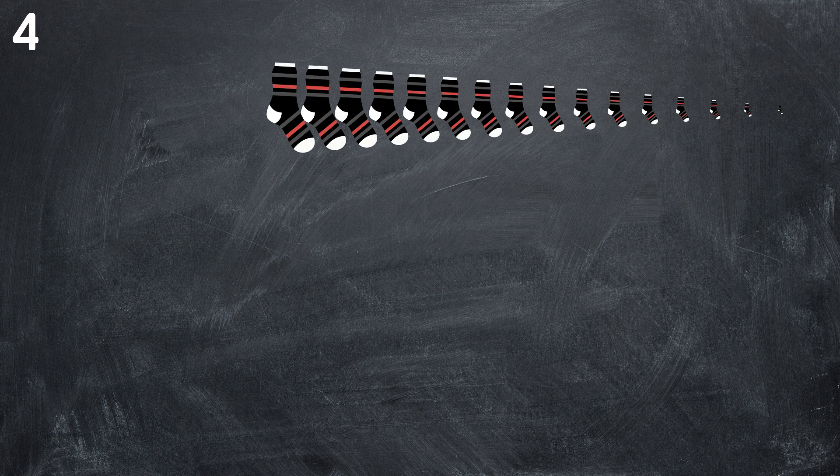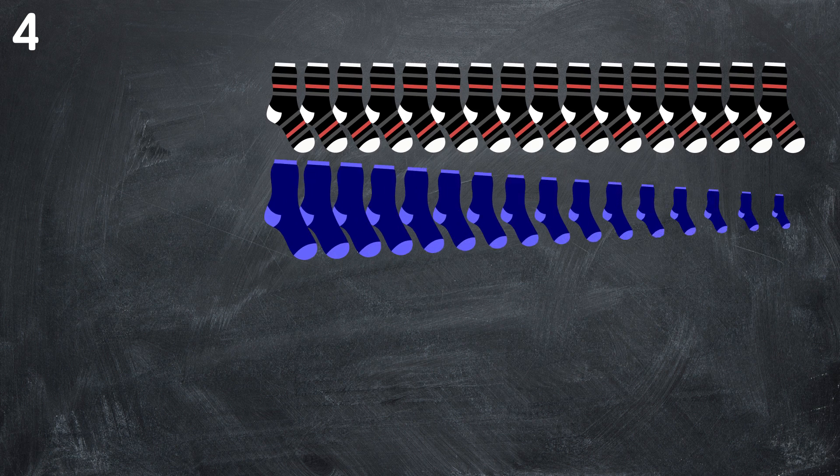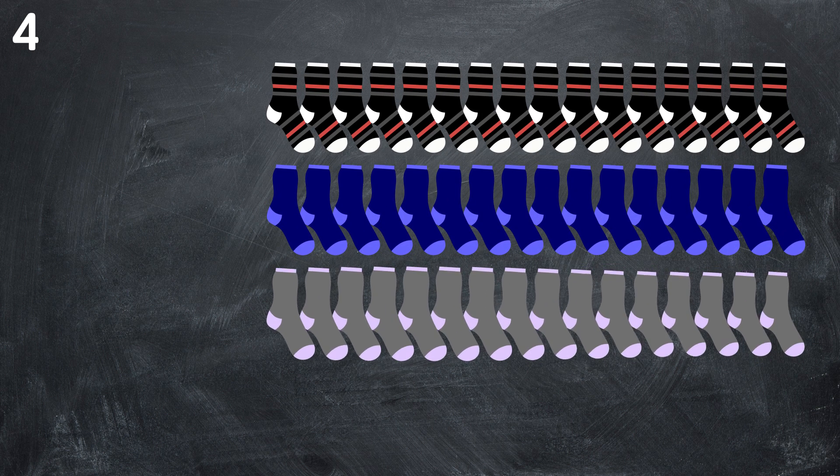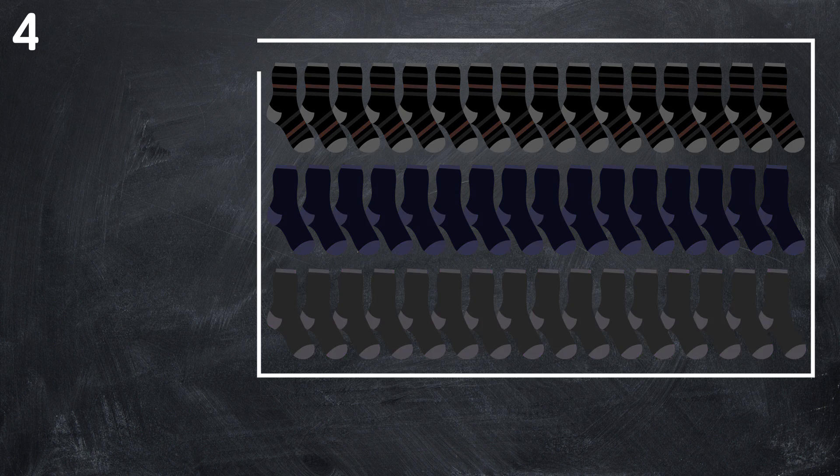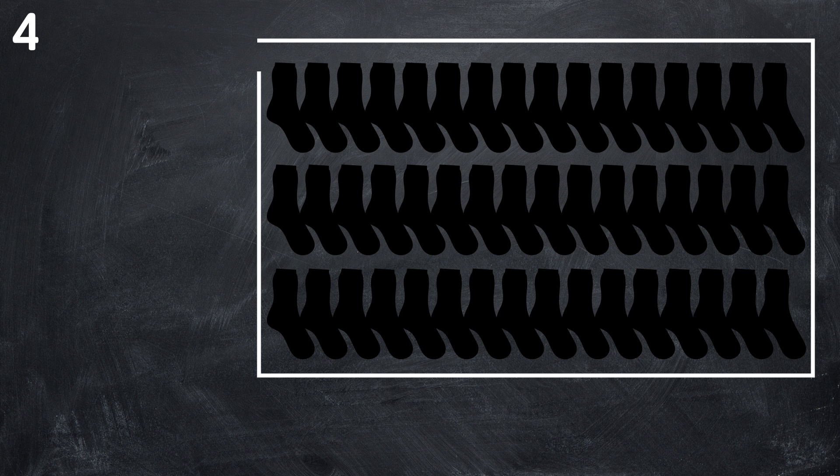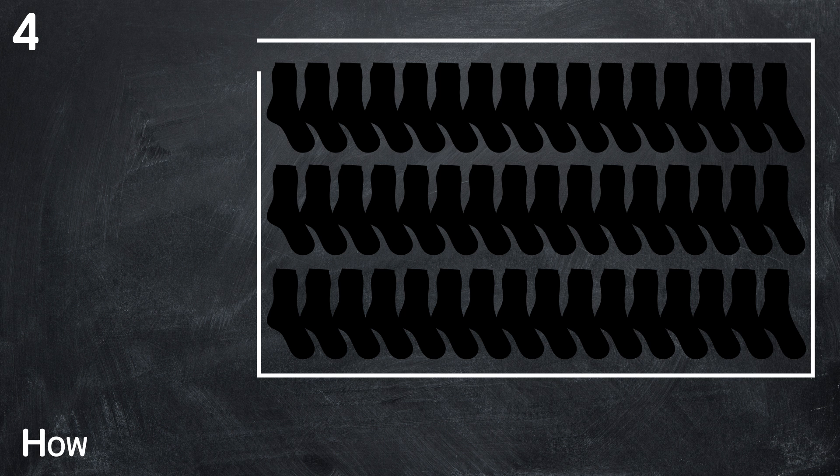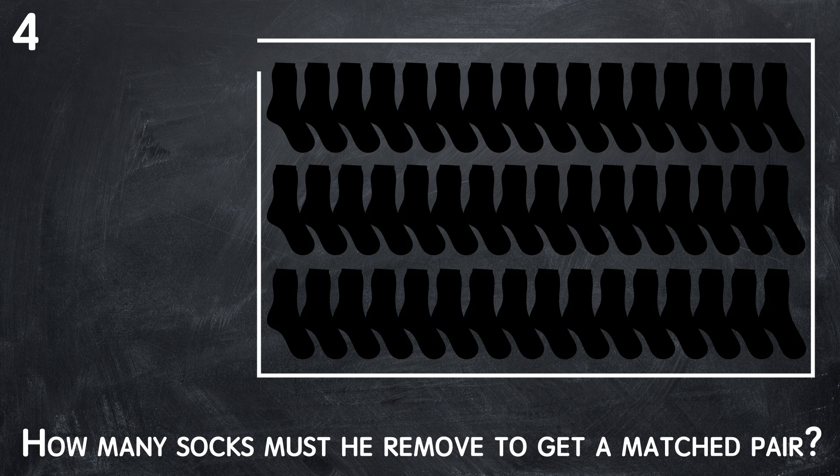4. John has 16 black socks, 16 navy blue socks, and 16 grey socks. They're in a sock drawer. It's dark in the room where the drawer is, and John can't see the colors of the socks, but he's in a hurry. How many socks must he remove to get a matched pair? You have as much as 15 seconds to solve this riddle.